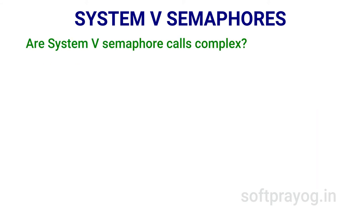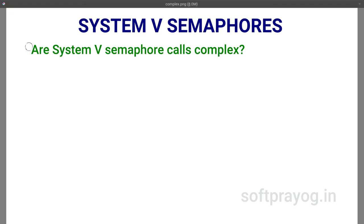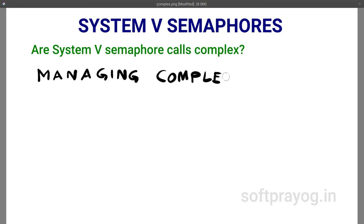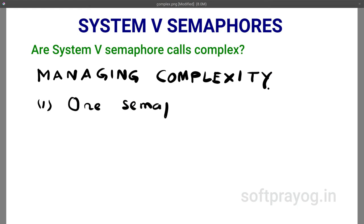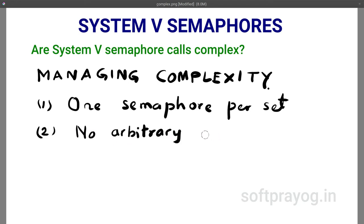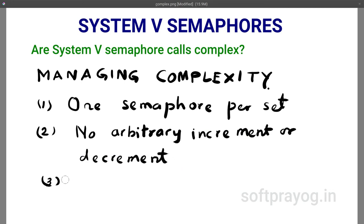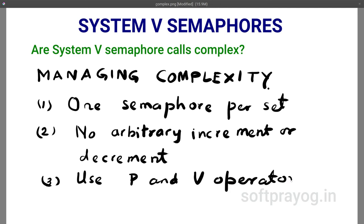Are System 5 semaphore calls complex? Some people think they are. To manage complexity, we use certain guidelines when using semaphores. First, no multiple semaphores in a set — only one semaphore per set, so semaphore and semaphore set virtually mean the same thing. Second, no arbitrary decrement or increment in semop — implement P and V operators using semop. The program algorithm should only use P and V operators. This is the approach we use in our example program.